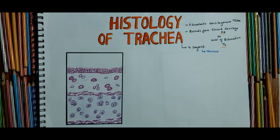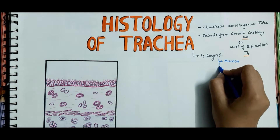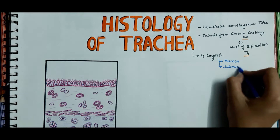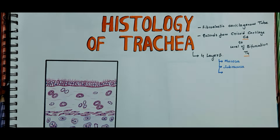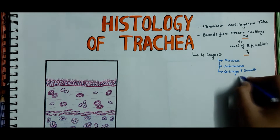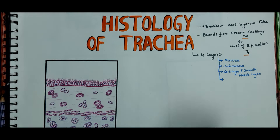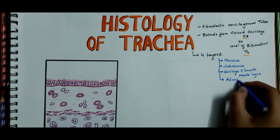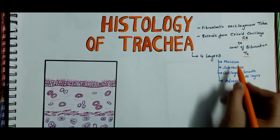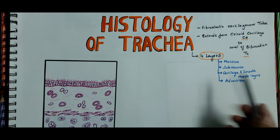The trachea consists of four layers. The first layer is the mucosa, the second layer is the submucosa, the third layer is the cartilage and the smooth muscle layer, and the fourth layer is the adventitia.